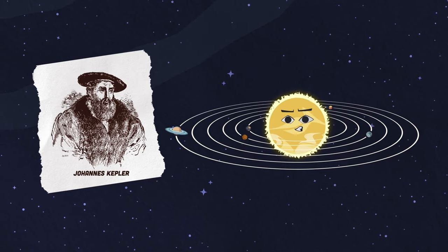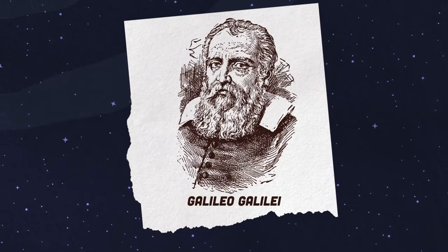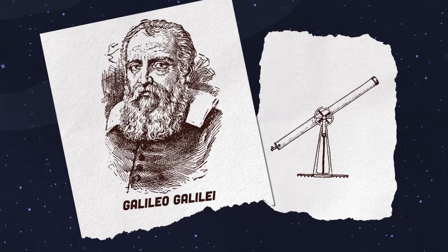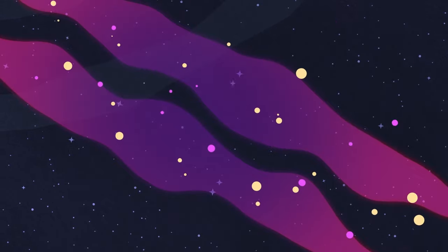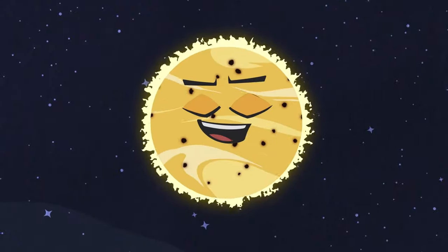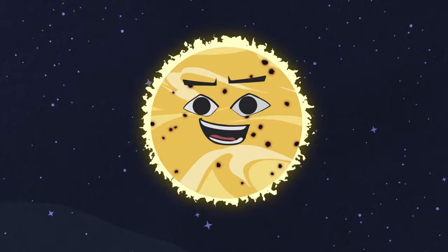Galileo Galilei used the newly invented telescope to see far, to discover the Milky Way clouds were actually stars. Galileo also learned that the sun had spots on it, which indicated the sun was definitely rotating.